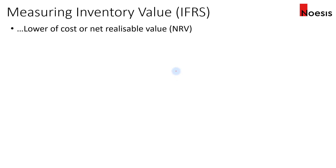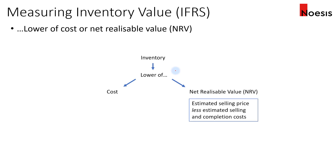Under IFRS, inventories will be measured at the lower of cost or net realizable value (NRV). NRV is the estimated selling price less the estimated selling and completion cost. If the value of the inventory declines below the carrying amount on the balance sheet, the carrying amount must be written down to the NRV, and the loss is recognized in the income statement — either as part of cost of goods sold or reported separately.